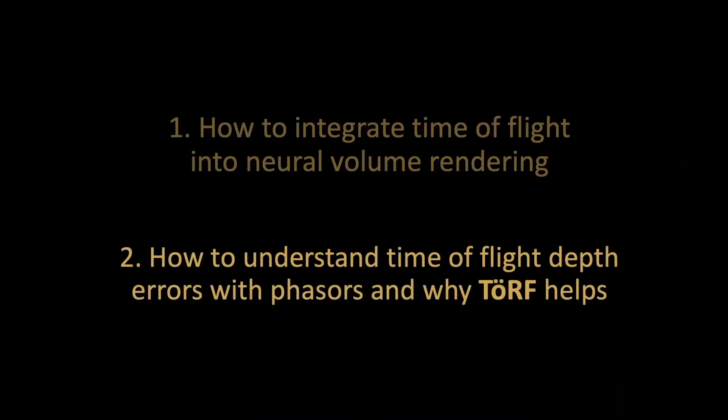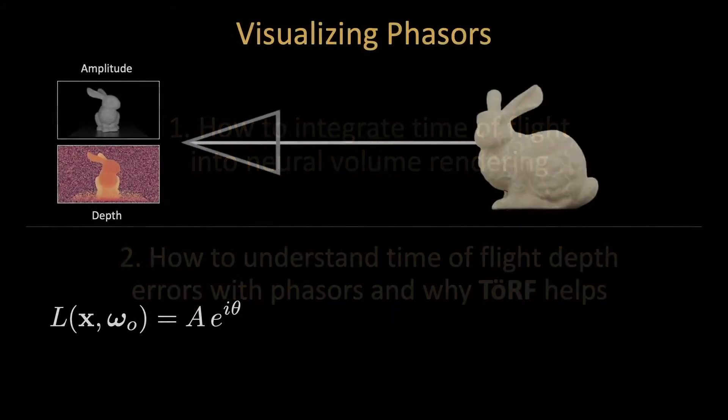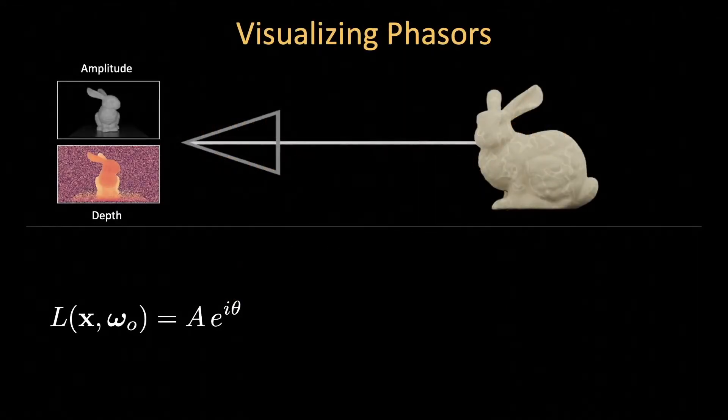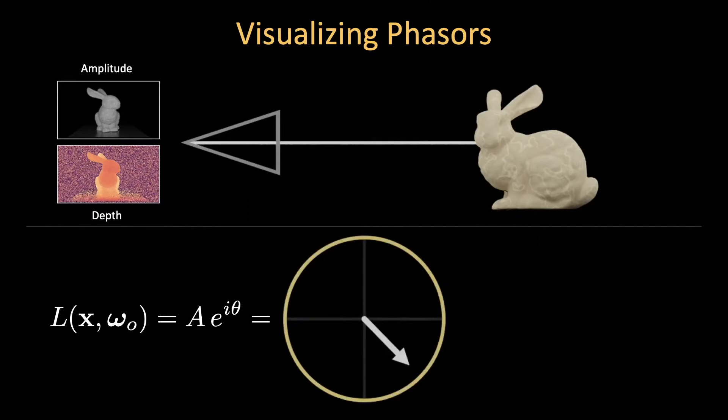On to part 2. Let's see why this assumption is problematic through the intuition provided by phasors, and how TERF overcomes potential problems. A phasor is nothing more than a complex number, or equivalently, a vector on the two-dimensional plane. The angle of this vector represents our phase, which is used to recover depth, and the length of this vector represents amplitude, corresponding to the amount of light reflected at a scene point.